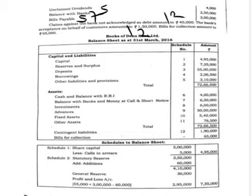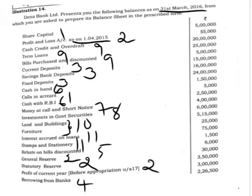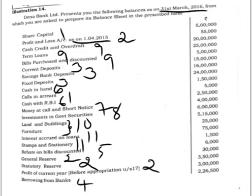Now coming to the solution — how to prepare each note. Note number 1, share capital: from 5 lakh we deduct calls in arrears of 5,000, giving a balance of 4,95,000, which is shown in the balance sheet. For note number 2, reserves and surplus, we show general reserve, statutory reserve, and profit and loss account balance after appropriations. The statutory reserve balance given is 3,50,000, which is the balance before the current year's appropriation.